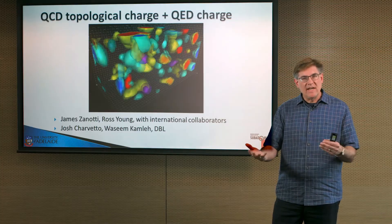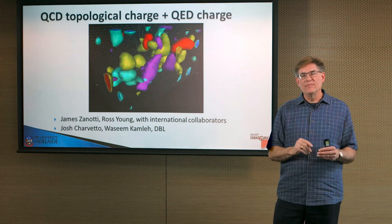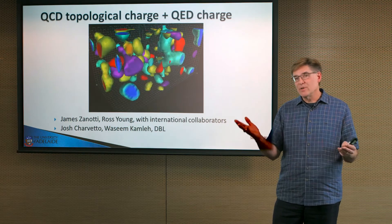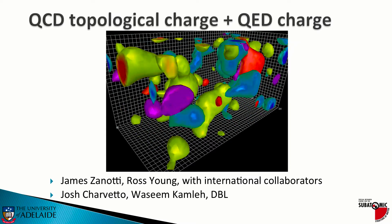Let me take you to the cutting edge of what we're doing at the University of Adelaide. This is a really interesting calculation because it's not only quantum chromodynamics that's been put on the lattice, but quantum electrodynamics is also there simultaneously — quark and color degrees of freedom working with quantum electrodynamic degrees of freedom. Remember, quarks carry charge: the up quark has charge two-thirds, the down quark has charge minus one-third. So these charges interact with the photon field. The yellow and red blobs are regions of large topological charge density, measuring the alignment of the electric and magnetic fields.